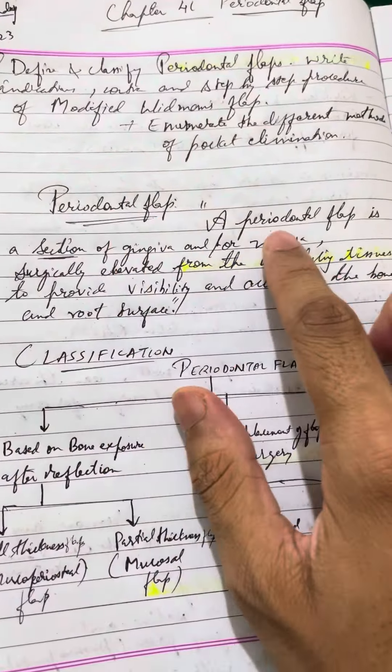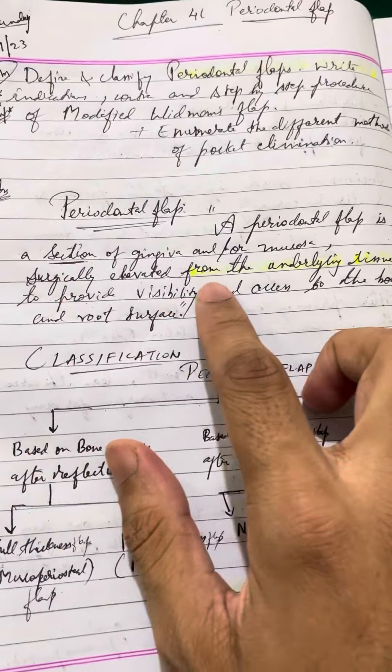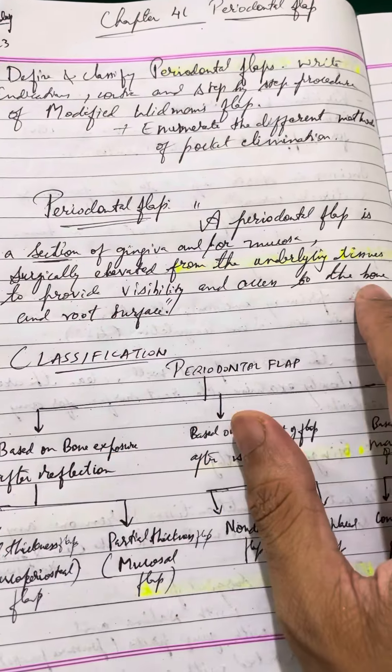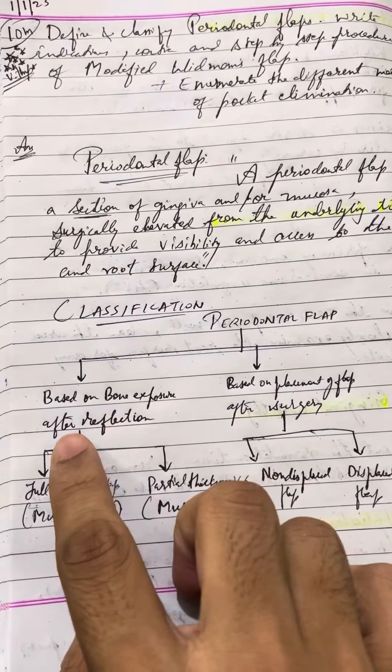A periodontal flap is a section of gingiva and/or mucosa surgically elevated from the underlying tissues to provide visibility and access to the bone and root surface. Classification of periodontal flaps based on bone exposure after reflection: